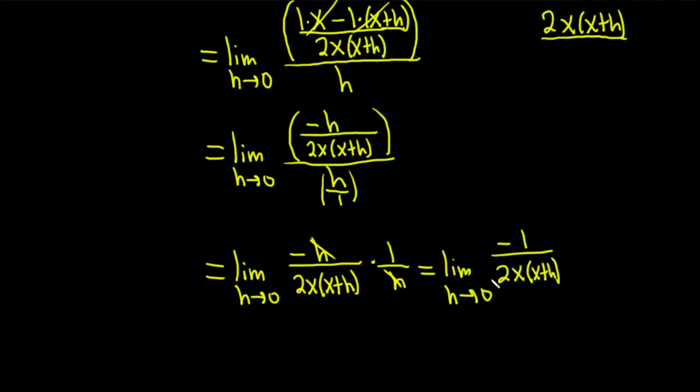And we finally reached a point where we can actually evaluate the limit. We can plug in 0 for h. When you do that, that's when you drop the limit sign. So we have negative 1 over 2x, parentheses x plus 0. That's just going to be negative 1 over 2x squared, which is the final answer.